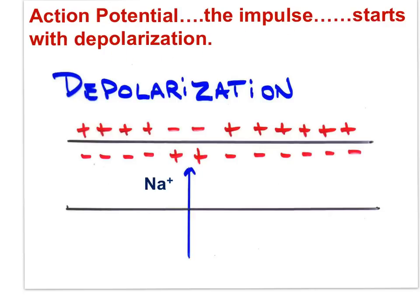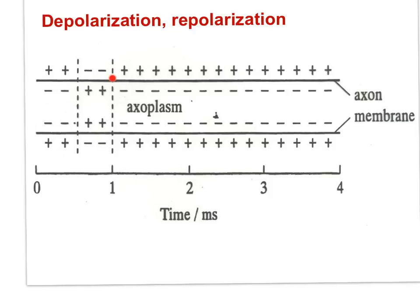Nerve impulses are action potentials that propagate along the membrane of the axon of a neuron. At the depolarized location on the membrane, the inside is more positive in charge relative to the outside, which is more negative. Sodium has diffused down its gradient into the cell to cause this. This is called depolarization. The depolarization event propagates or shifts along the axon — this is called an action potential. Propagation is the result of local currents that cause each successive part of the axon to depolarize.